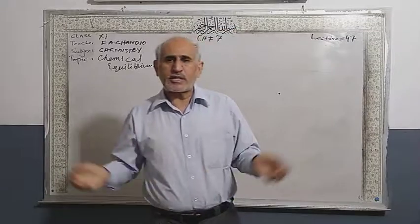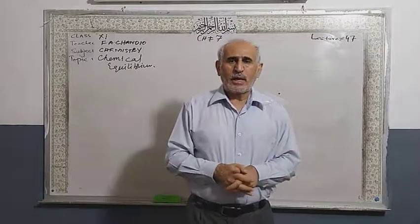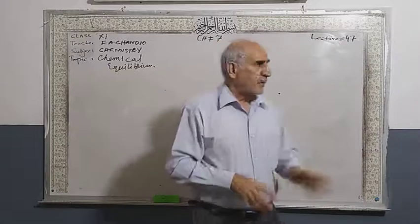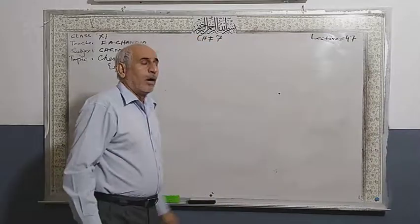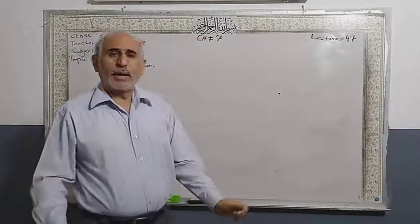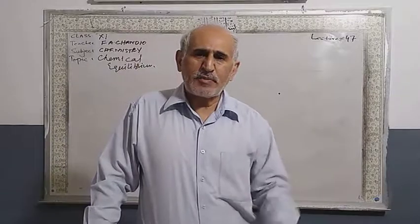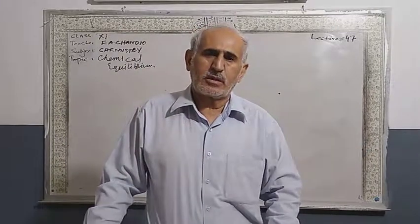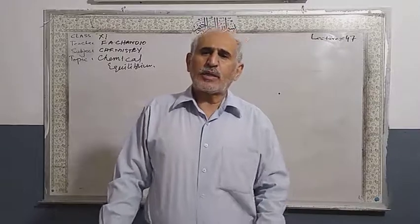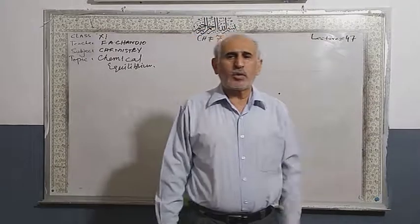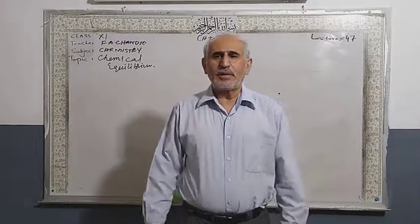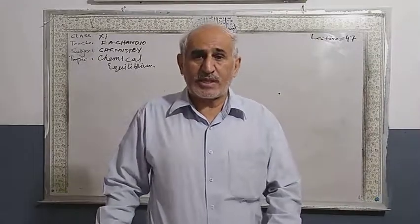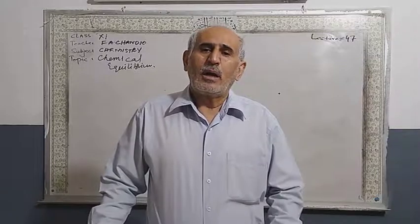There are two kinds of reactions we see in daily life. The first is irreversible chemical reactions — when reactants change completely into products and those products do not change back into reactants. This type of chemical reaction is called an irreversible chemical reaction.